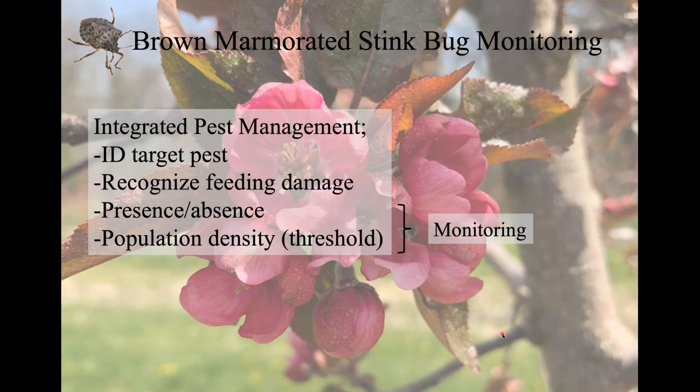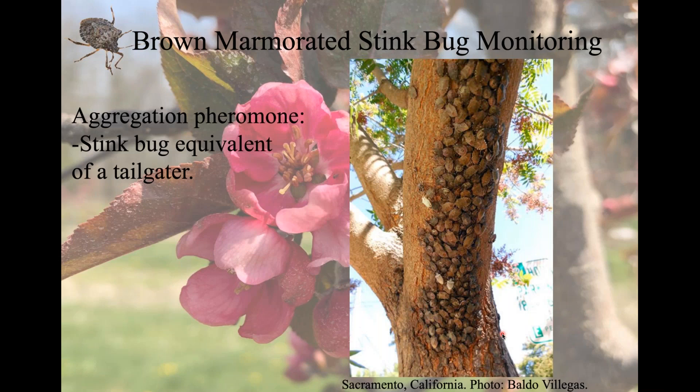In order to successfully implement any integrated pest management program, you have to be able to identify your target pest and recognize the feeding damage so you know you're experiencing crop loss. The next part is monitoring — if you know what's there and the level of population, you can make better decisions about management. What we use is an aggregation pheromone, and it's basically the equivalent of a tailgater: you get your grill going and people smell it and come over. Brown marmorated stink bug emits a feeding aggregation pheromone — one stink bug emits it, another comes over, that one emits it too, and so on until you get a huge mass.